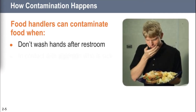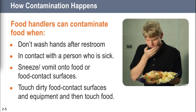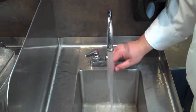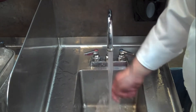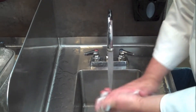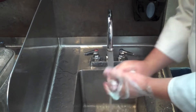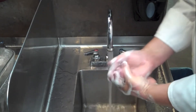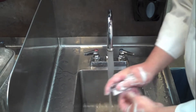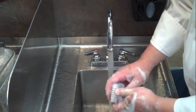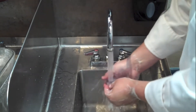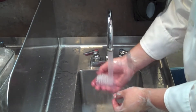The most common and grossest way is by not washing their hands after using the restroom. If you go to the bathroom, make a number two, don't wash your hands after wiping, and then go make someone a salad — you're passing on contamination. But you don't actually have to be that disgusting to contaminate food.